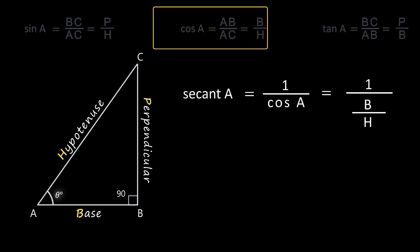Secant A is the reciprocal of cos A. We derived the ratio of cos A to be base by hypotenuse that is B by H. So secant A is going to be the reciprocal of cos A. So 1 by B by H gives us H by B that is the ratio between hypotenuse and base.